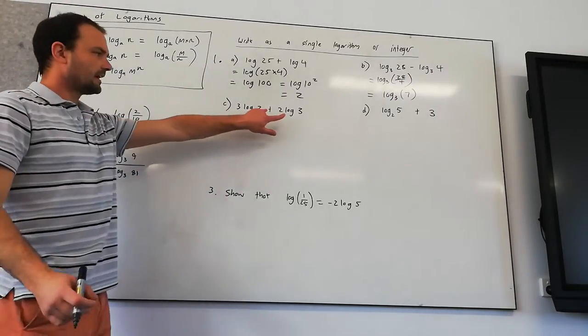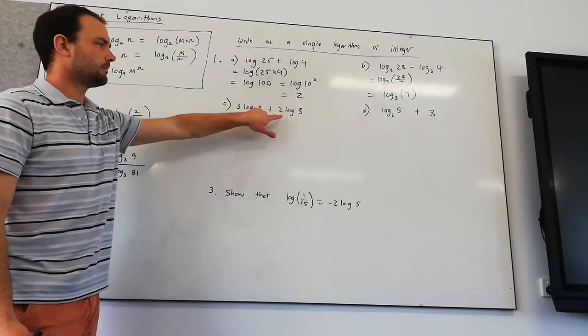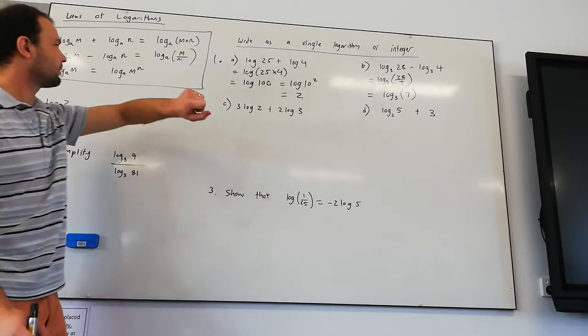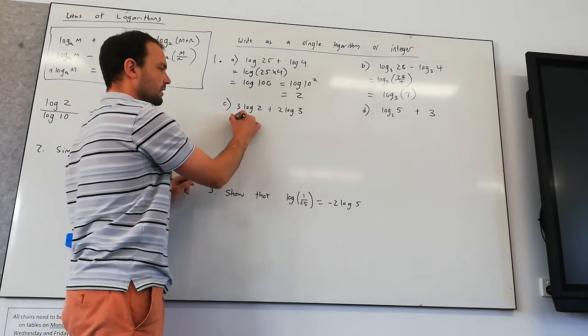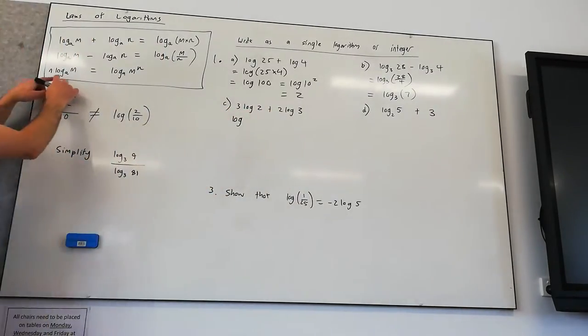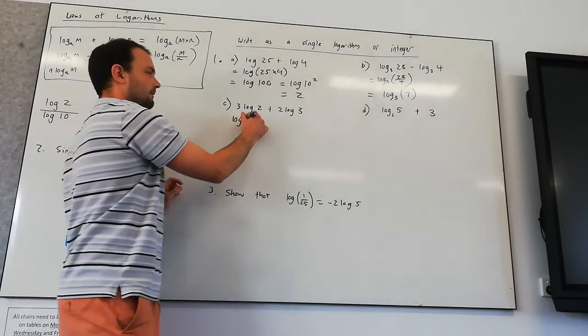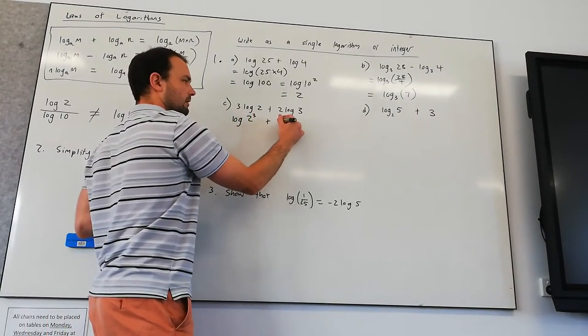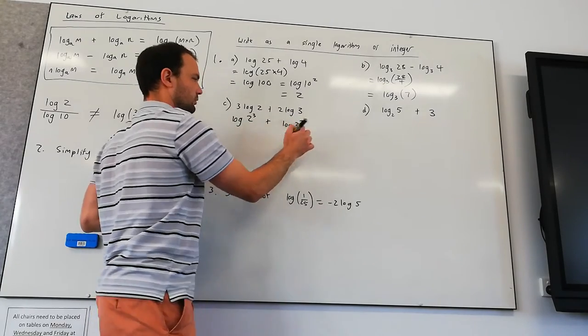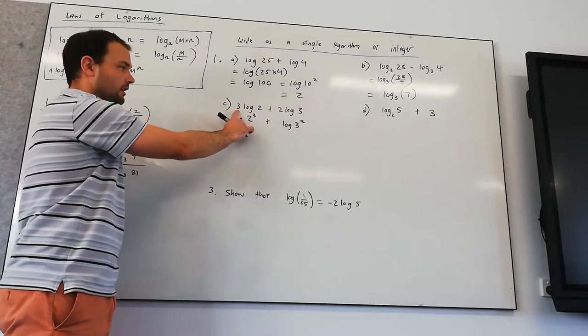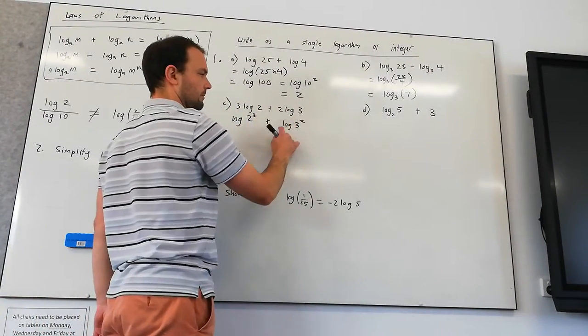Down here, before we can collect these, we need to get rid of these numbers out the front. So before we can perform any operation, we'll see up here there's no numbers out the front, so we need to get rid of them. And the way we're going to do that is power rule. We can move that number and make it a power. So we're going to have log of 2 to the power of 3, plus log of 3 to the power of 2. So this number out the front is becoming a power.